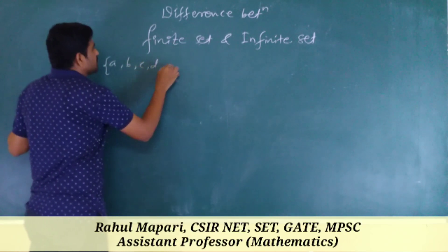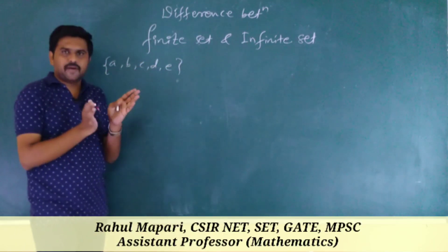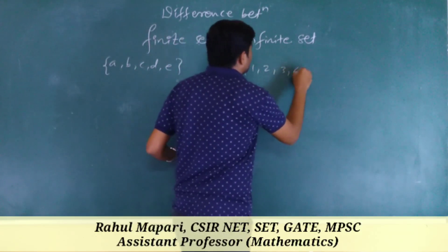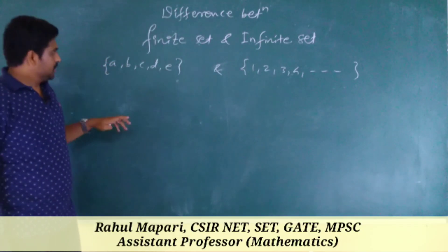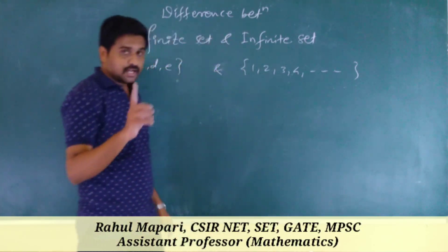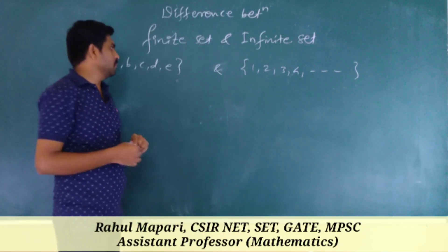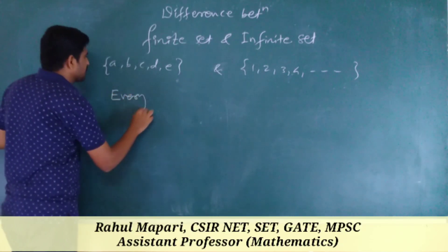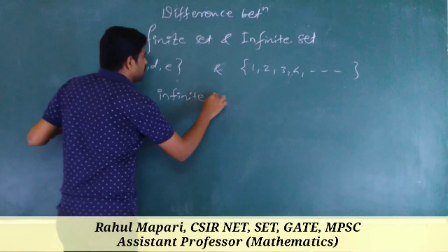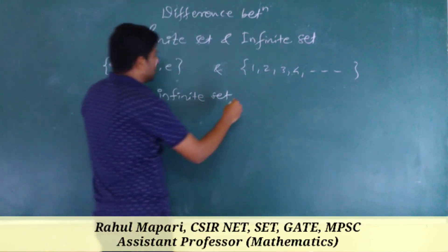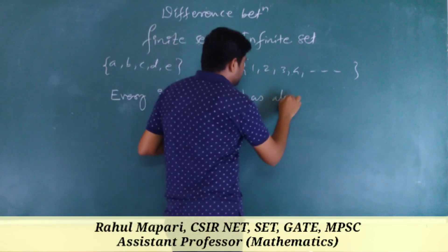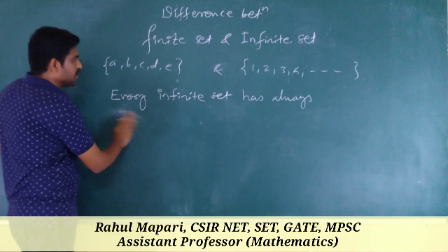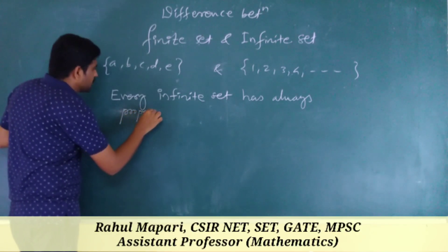A finite set looks like this — it has n number of finite elements. An infinite set, for example the set of natural numbers, goes on infinitely. But the second and more important difference is this statement: every infinite set always has at least one proper subset which is similar to itself.